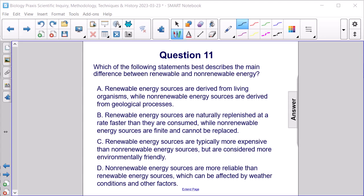B. Renewable energy sources are naturally replenished at a rate faster than they are consumed, while non-renewable energy sources are finite and cannot be replaced. C.